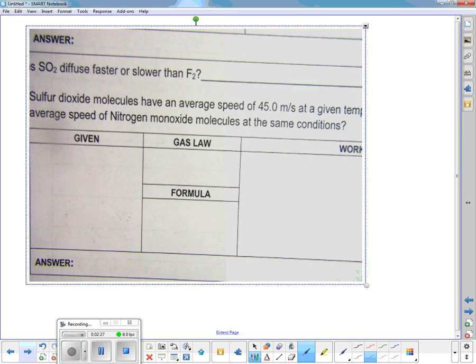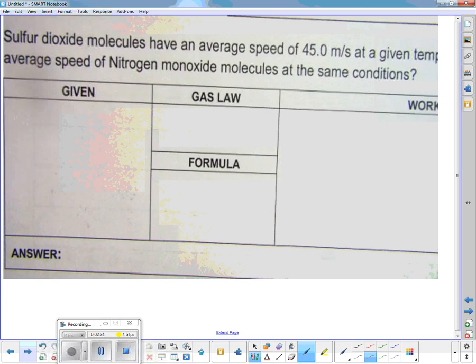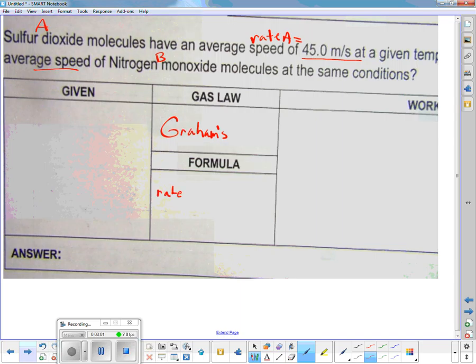Okay, number 14. Everything on this side is Graham's Law because it says speed. Anytime it says speed or relative rate, that's a clue it's Graham's Law. So sulfur dioxide is my first one, that's A. Average speed is basically saying rate A. Nitrogen monoxide is my B.